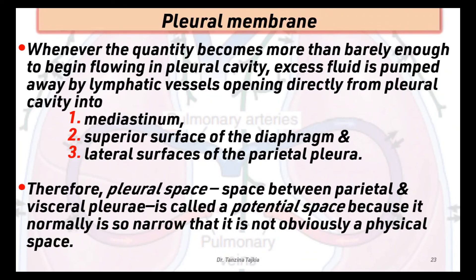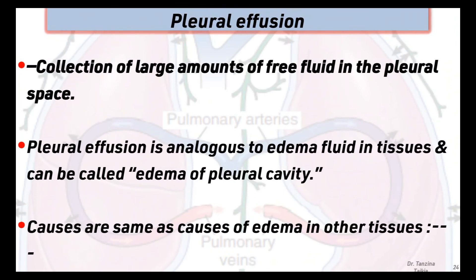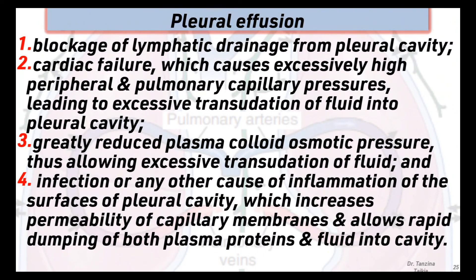Whenever the quantity becomes more than barely enough to fill the pleural cavity, excess fluid is pumped away by lymphatic vessels which open directly from the pleural cavity into the mediastinum, the superior surface of the diaphragm, or the lateral surface of the parietal pleura. Therefore the pleural space, which is the space between the parietal and visceral pleura, is called a potential space because it is normally so narrow it is not obviously a physical space. Pleural effusion is the collection of large amounts of free fluid into the pleural space, analogous to edema of fluid in tissues. Causes include: blockage of lymphatic drainage, cardiac failure, greatly reduced plasma colloid osmotic pressure, and infections or other causes of inflammation of the pleural cavity surface.